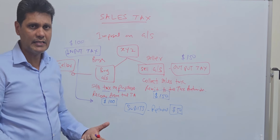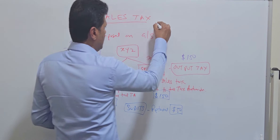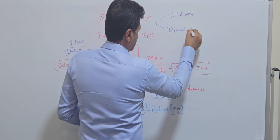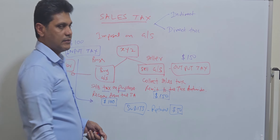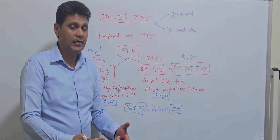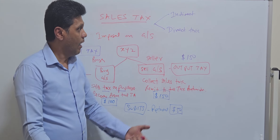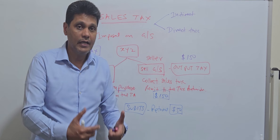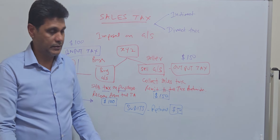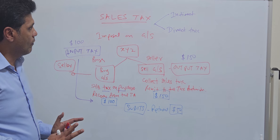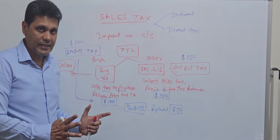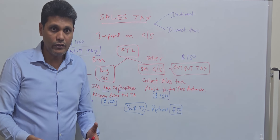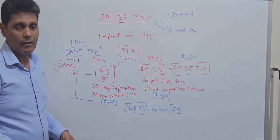Sales tax is also known as an indirect tax. There are two types of taxes: indirect tax and direct tax. Sales tax is an indirect tax because it is not charged on the income of an individual. Direct tax, on the other hand, is usually charged on the income of individuals or companies.